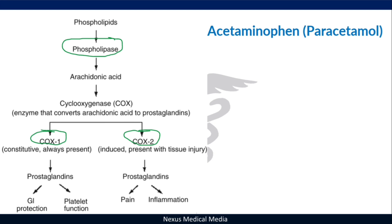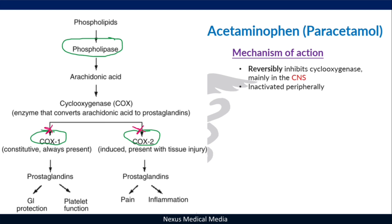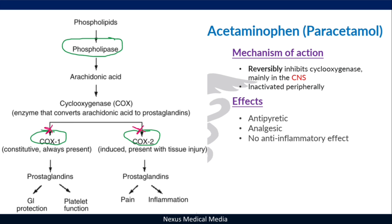If we give a patient paracetamol, it will inhibit both COX-1 and COX-2. The mechanism of action of paracetamol is that it reversibly inhibits cyclooxygenase — both COX-1 and COX-2 — particularly in the central nervous system. It is inactivated peripherally.